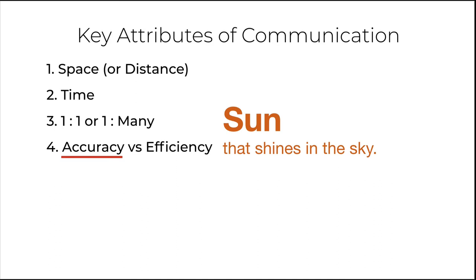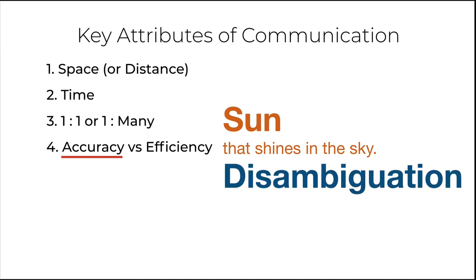However, this also makes communication inefficient — inefficient in the sense that to transmit one word, sun, we are adding five more words, 'that shines in the sky.' We can add fewer words, but the point is we are adding something and hence making the communication inefficient. But we are fine with this trade-off because that is the price we pay for maintaining accuracy. This process of adding more information to maintain accuracy of communication is called disambiguation. Ambiguous is that which can create confusion, and disambiguation ensures that our message remains accurate even when transmitted across hops.